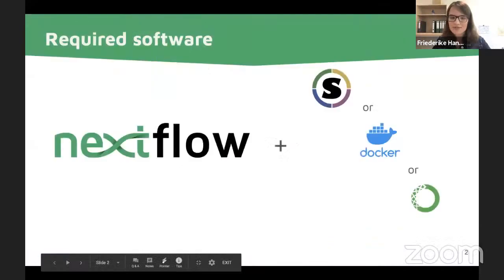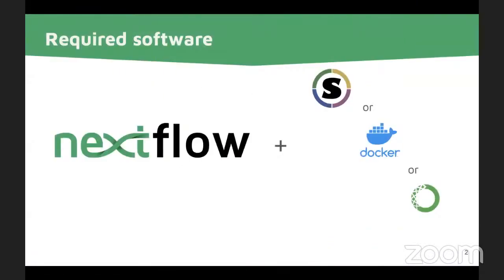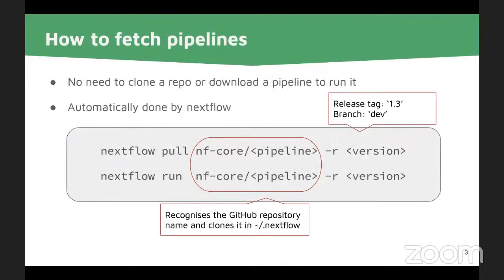First things first — you don't really have to worry about installing any software needed for the pipeline processes themselves. What you do need is to install Nextflow and then one of Singularity, Docker, or Conda. And with that, you are set to go. If you joined the Nextflow tutorials this morning, then you've already learned how to install Nextflow.